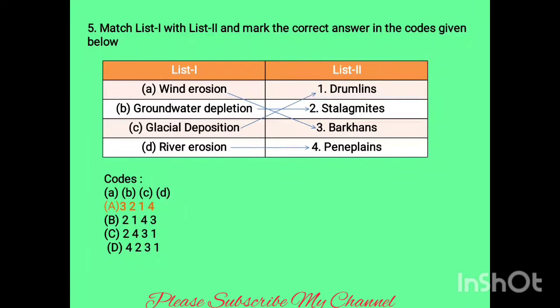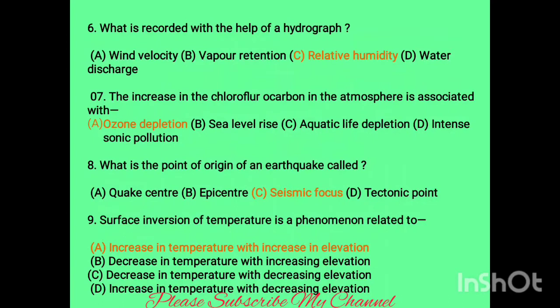Question five is a matching question. List one gives erosion and deposition agents; list two gives landforms. Wind erosion is related to barchans, groundwater depletion is related to stalactite, glacial deposition is related to drumlin, and river erosion is related to peneplain. The answer is option A.